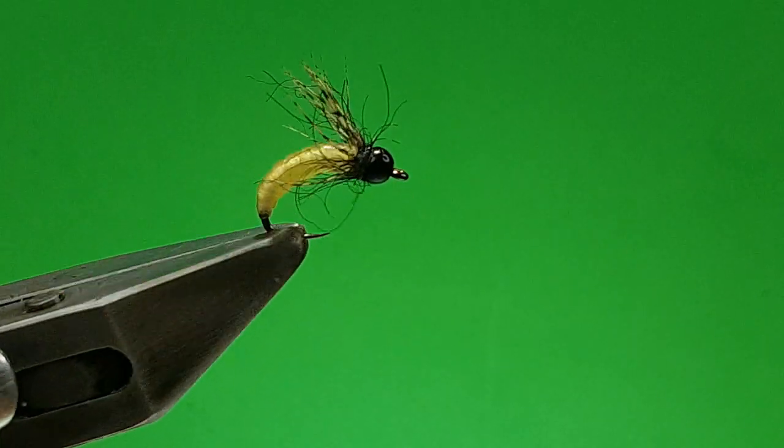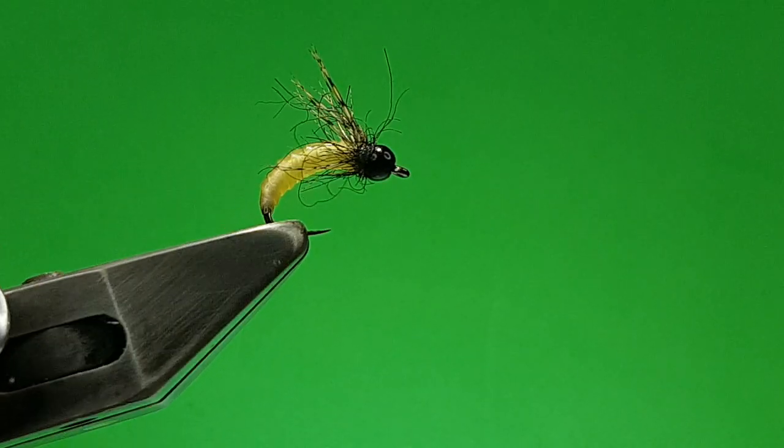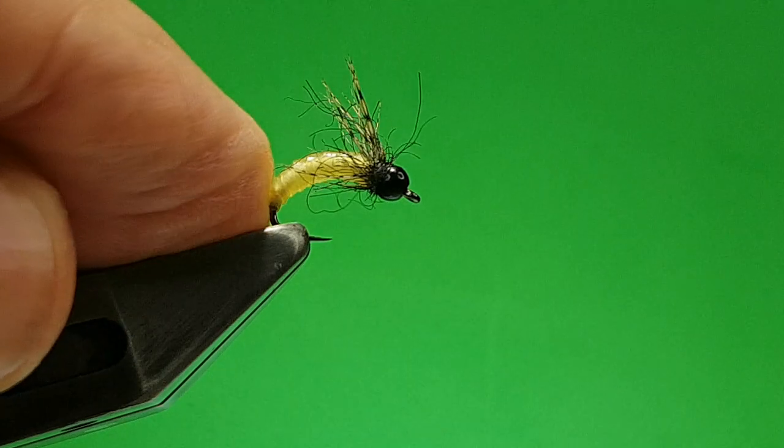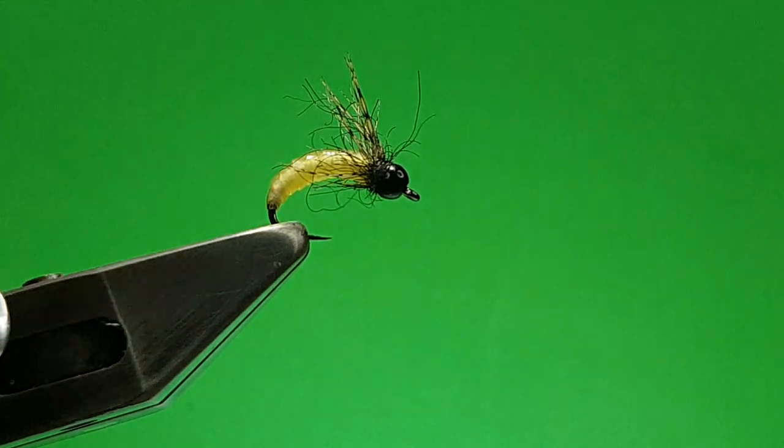You can see right through that there, very translucent, very natural looking. So here we go. The hook I like for this, it's a relatively new hook, it's a Fasna, it's a 120.